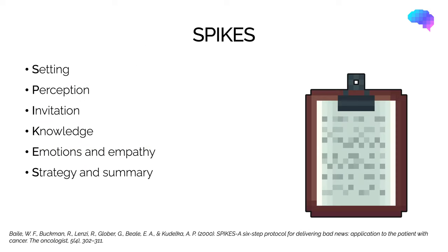Let's move on now and think about the SPIKES framework for breaking bad news. SPIKES is a framework to help us break bad news, and there are six stages: Setting, Perception, Invitation, Knowledge, Emotions and Empathy, and Strategy and Summary. It's important to point out that SPIKES is not a script; instead it's a framework to help us structure our consultation and deliver bad news well. We're going to look at each stage in a little more detail.